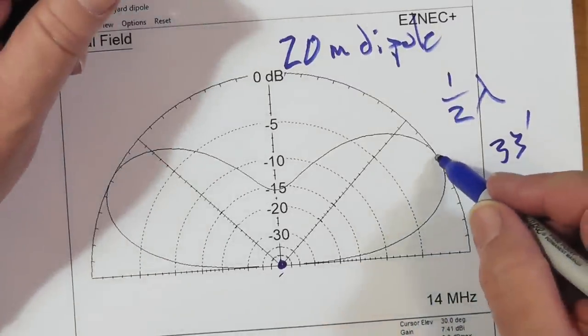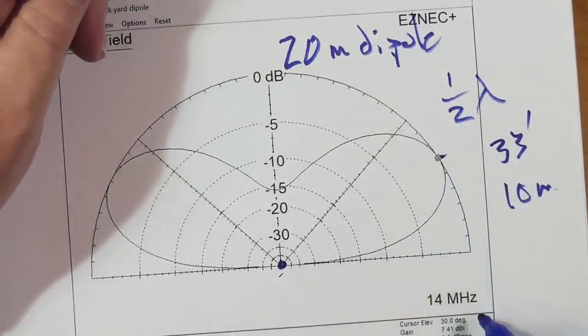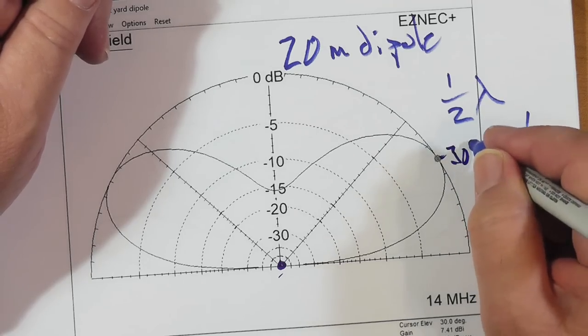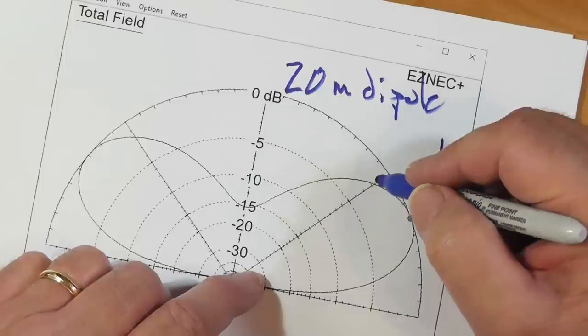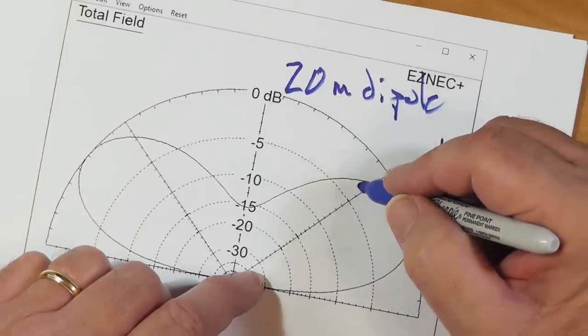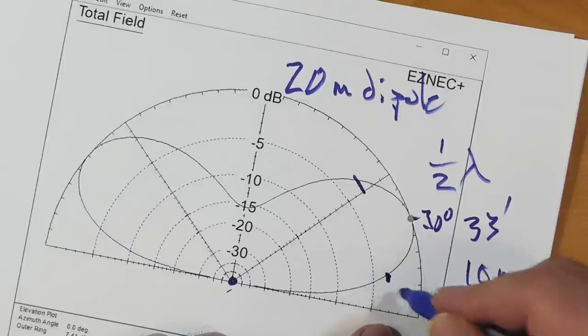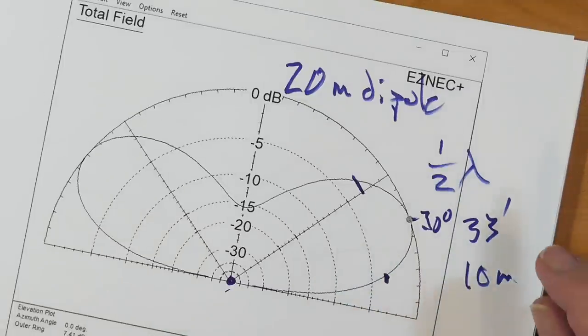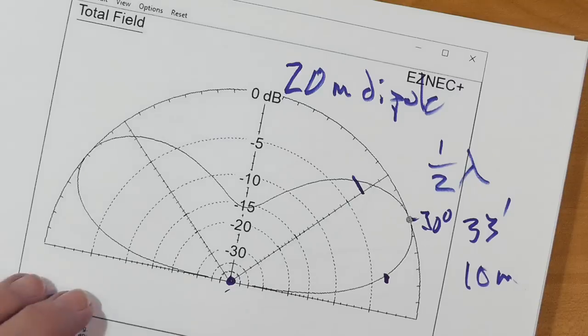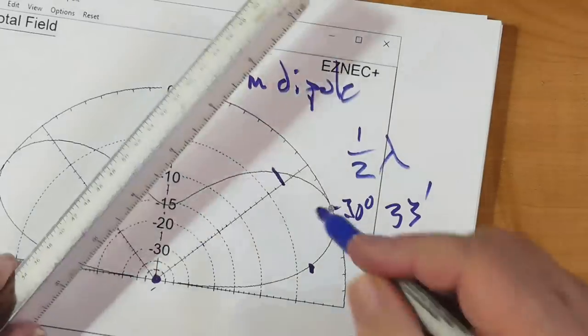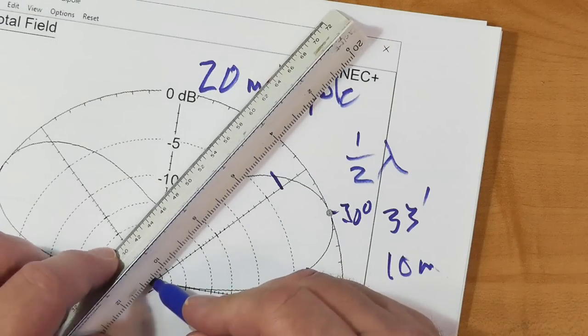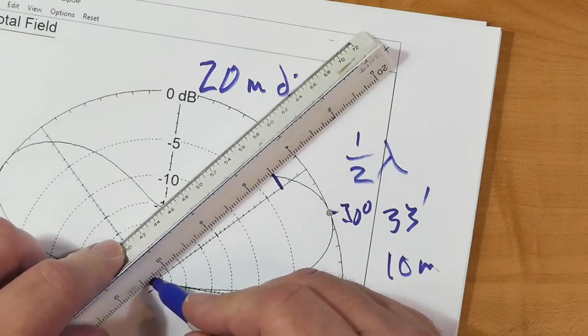Now, look at the angle of this lobe. It's at 30 degrees. Now let's look at the beam width. We're going to come down to the one third point - I'm sorry, 3 dB down. This is how you define the bandwidth on an antenna.